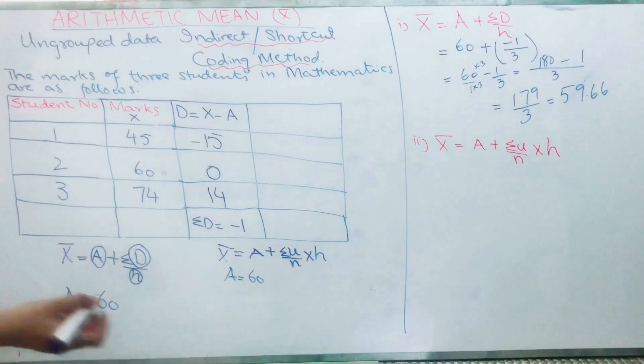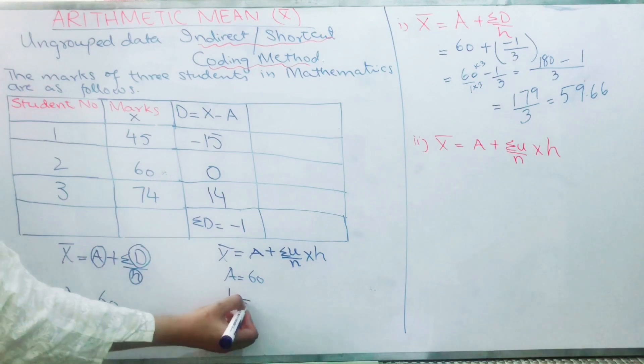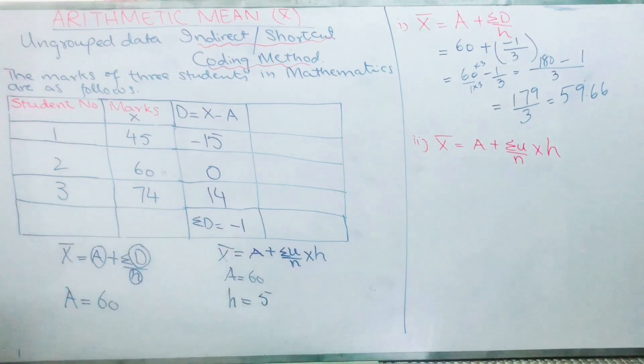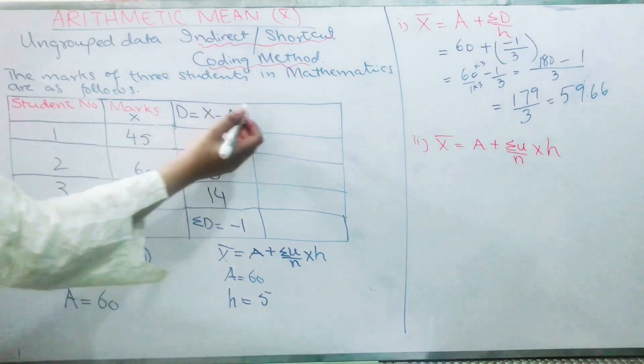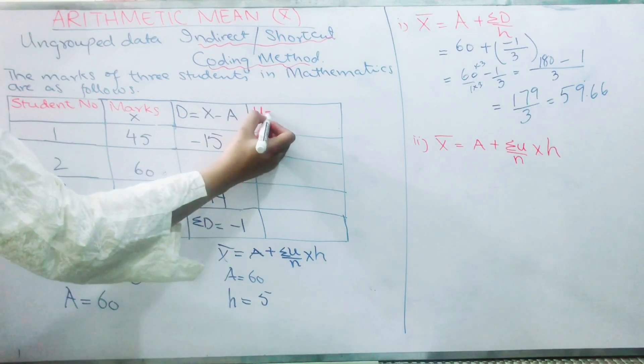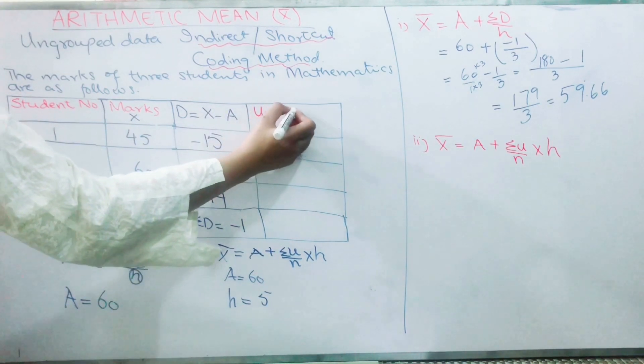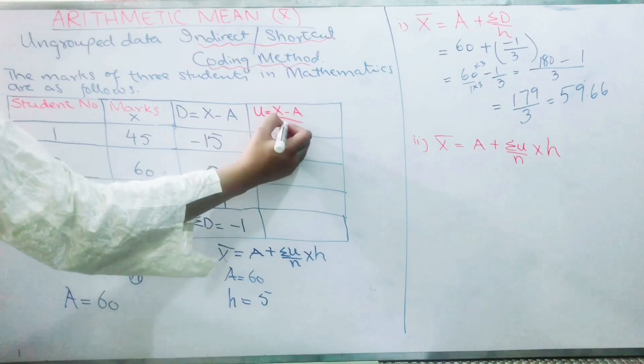So if you see these values, then you can decide your h. I'm taking here h = 5. Mostly we take 5, 10, 20, like these numbers. So 5 I have taken as my class interval.